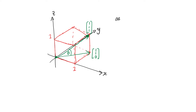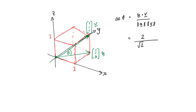So cosine theta is going to be u dot v over the length of u times the length of v. Let's have the bottom vector as u and the diagonal vector as v. u dot v: 1×1 + 1×1 + 0×1 = 2. That gives us 2 divided by the length of u. The length of u is the square root of 1² + 1², which is √2. Times the length of v, which is √(1² + 1² + 1²) = √3. So you could write that as 2 over √6. So that gives me the cosine of the angle.